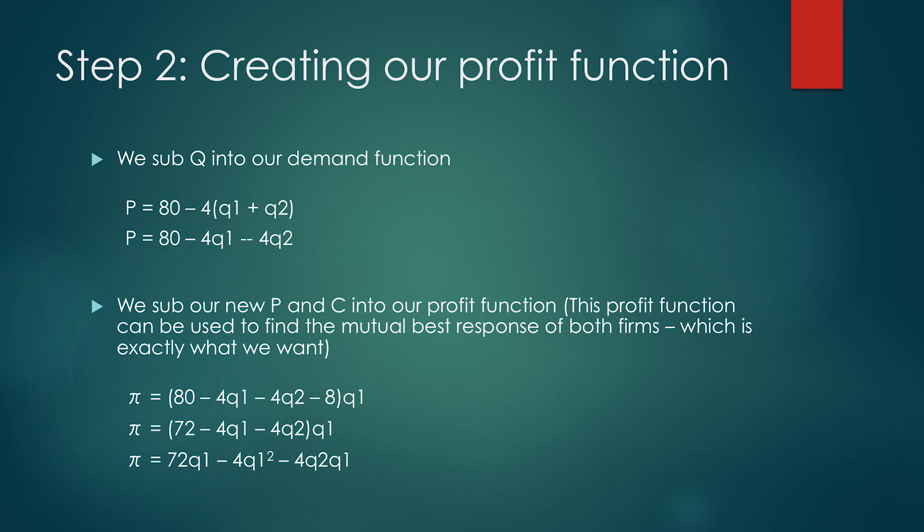This profit function can be used to find the mutual best response of both firms, which is exactly what we're looking for. When you simplify that equation, you get π equals 72q1 minus 4q1 squared minus 4q2q1.